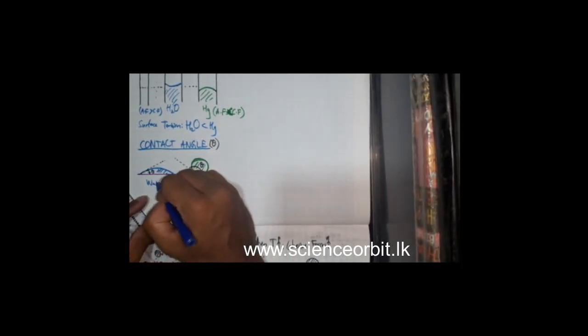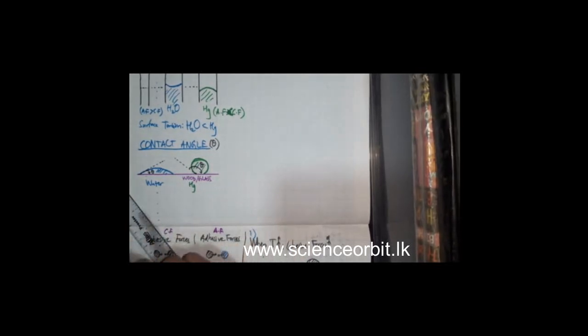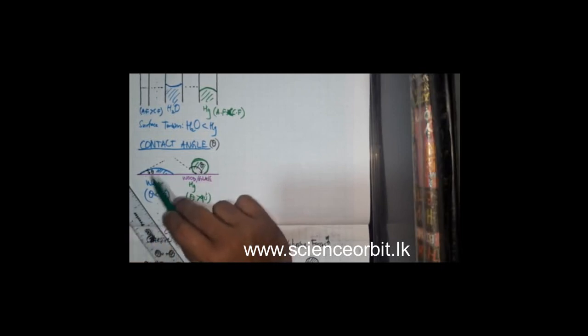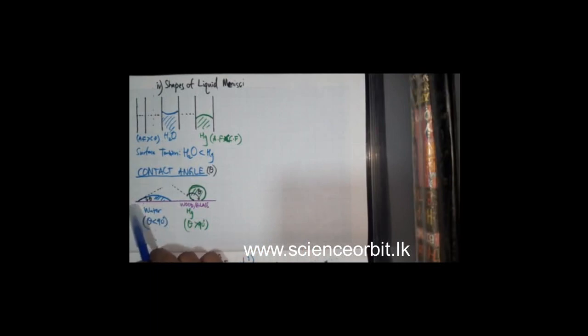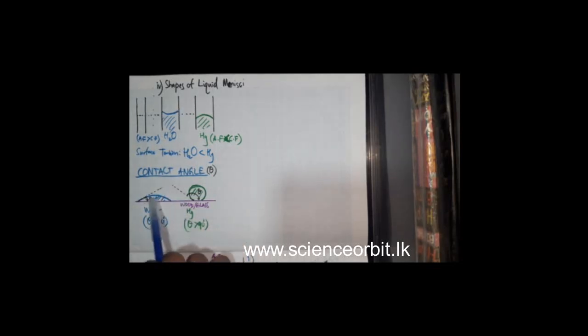The blue color liquid is water and the green color liquid is mercury. Contact angle for water is less than 90°, and contact angle for mercury is greater than 90°. Liquids which wet a surface more have a smaller contact angle, and liquids which do not wet the surface much have an obtuse contact angle.